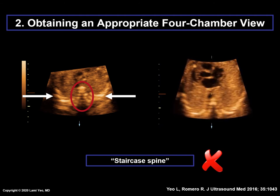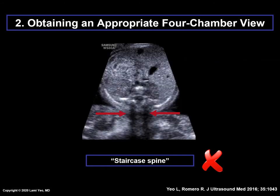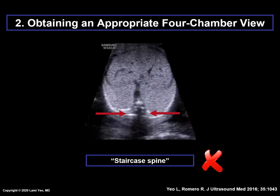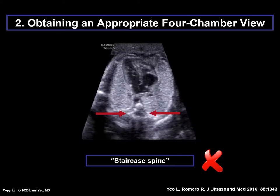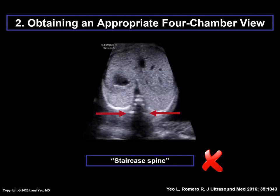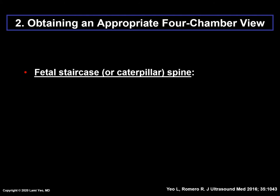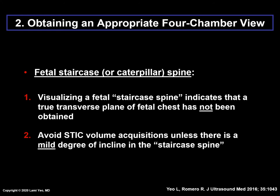Here is an example of no staircase spine. The fetus is completely supine, in vertex presentation, and a longitudinal lie. As the transducer sweeps from cranial to caudal ends, the fetal spine is always located at the same area on the screen with its three ossification centers visualized in each serial transverse plane — in this example, always at 6 o'clock. In contrast, with a staircase spine, the spinal ossification centers are stacked upon each other like a staircase or caterpillar, and the curved ribs are also seen. Visualizing a fetal staircase spine indicates that a true transverse plane has not been obtained; therefore, avoid STIC volume acquisitions in this situation unless there is only a mild degree of incline.